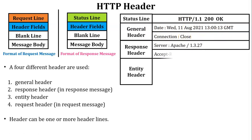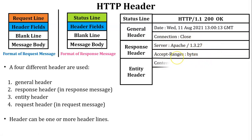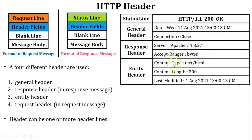The response header consists of two lines. The first line is the server field, indicating from which server the response message was generated — in this diagram, it is generated from the Apache server. The second line indicates in which unit the server will accept the data — it will be in bytes. The entity header contains three lines: the first indicates the content type, which is text HTML; the second indicates the content length, which is 200 bytes; and the third line is last modified, indicating when this response message was last modified.